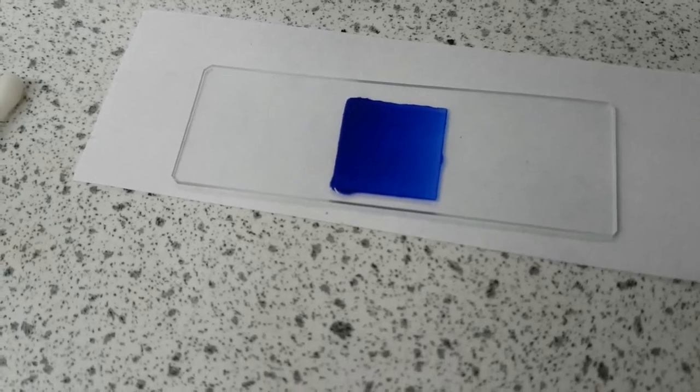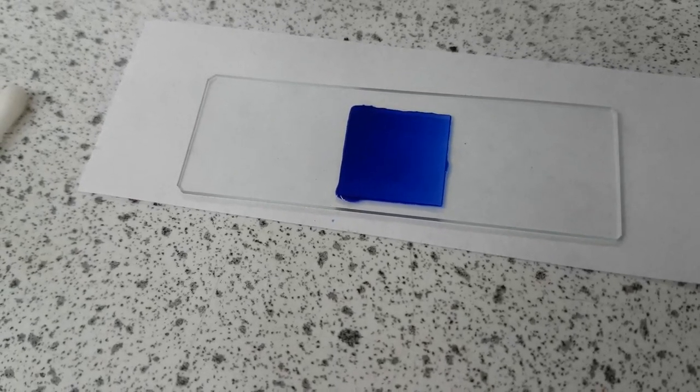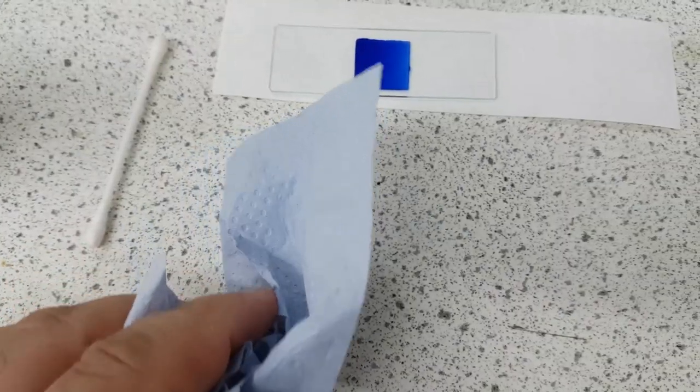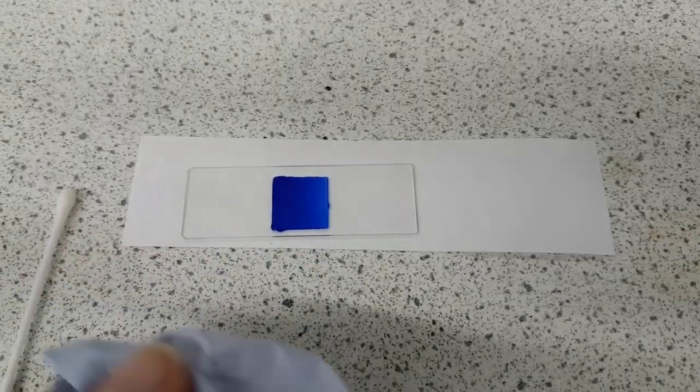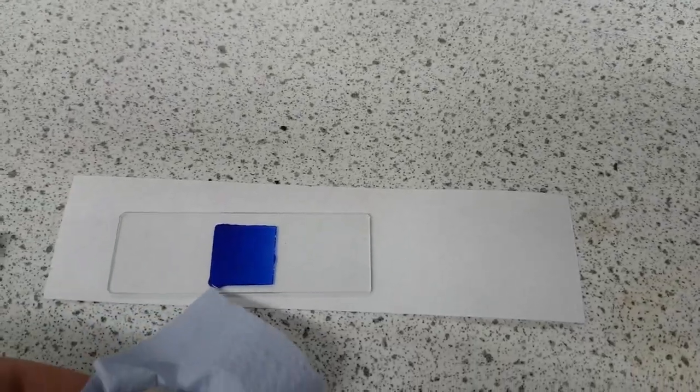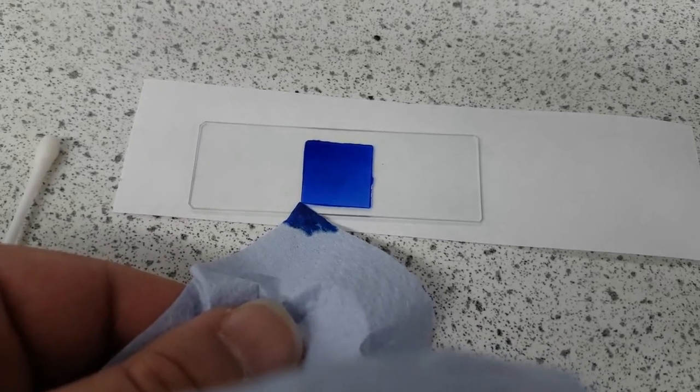So what we're going to do though is we want to absorb some of the excess methylene blue solution and we do that using a paper towel. Let me show you. So here's my paper towel and I'm just going to literally just place it where the methylene blue is and just absorb it.